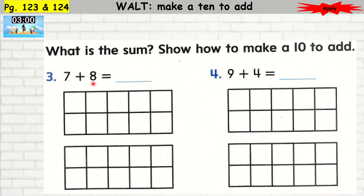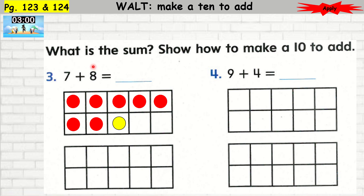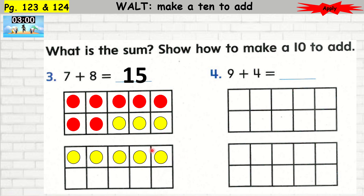Question number 3: 7 plus 8. This time I'm going to draw. So I'm going to draw 7 circles first. 1, 2, 3, 4, 5, 6, 7. So I have 7 red circles, and I'm going to draw yellow circles for the 8. Remember, I'm going to continue to fill this before I go to the next one. So 1, 2, 3, 4, 5, 6, 7, 8. Stop. So now I have 7 red and 8 yellow. Let's add them together — here you have 10 and here you have 5. So 10 plus 5 is 15.